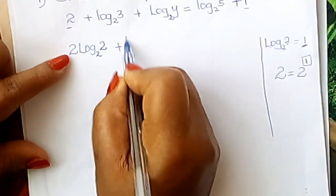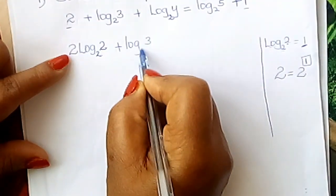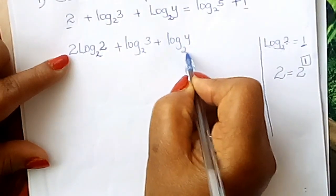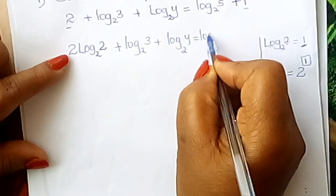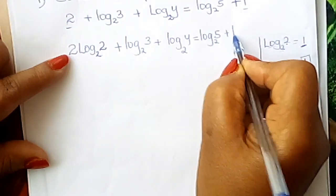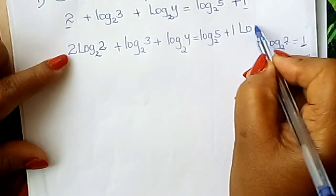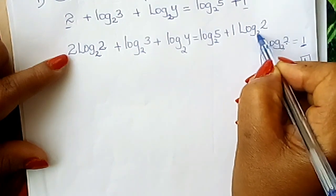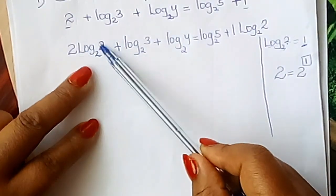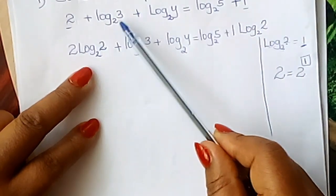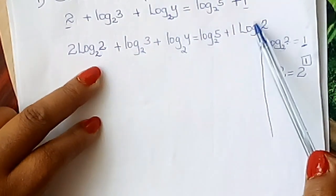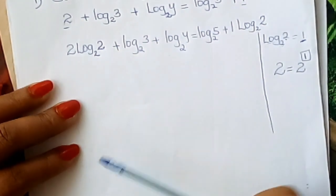So plus log₂3 plus log₂y is equal to log₂5 plus 1. Again, you introduce log₂2 here. You just look at the base. The base is the one that guides you on what log to put. So this is to base 2, to base 2. So you write log₂2 there.